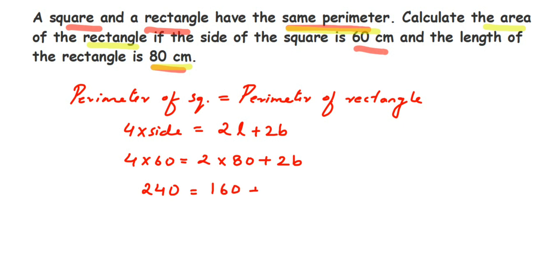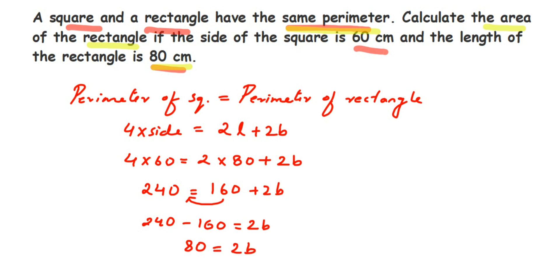We transpose 160 to the other side, so 240 − 160 = 2b. That gives us 80 = 2b. Transposing 2 to the other side, b = 80 ÷ 2 = 40. So the breadth is 40 centimeters. Now we know length = 80 centimeters and breadth = 40 centimeters.